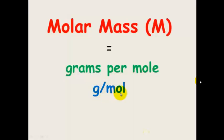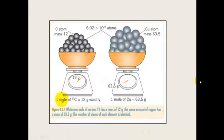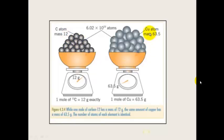This can be written as grams per mole, or as grams mol⁻¹, which is exactly the same as grams per mole. When we're looking at one mole of carbon, it has a mass of 12 grams exactly. Remember, this is what the whole relative atomic mass is based on — carbon-12 having a mass of 12 grams. One mole of copper has a mass of 63.5 grams. So the molar mass of carbon is 12 g mol⁻¹, and the molar mass of copper is 63.5 g mol⁻¹.